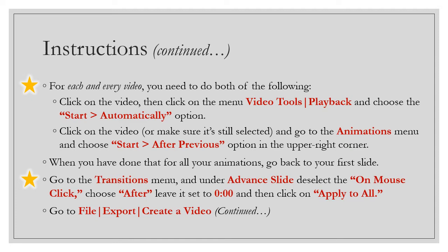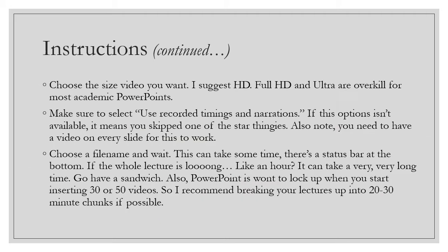When you've done that for all of your videos, go back to the first slide, go to the Transitions menu, and under the Advanced Slide option deselect 'On Mouse Click,' choose 'After,' and leave it set to zero zero zero — meaning after zero seconds — then click 'Apply to All.' Also note: you have to have a video on every slide for this to work. You're tricking PowerPoint into thinking every video is an animation that will advance the slide.